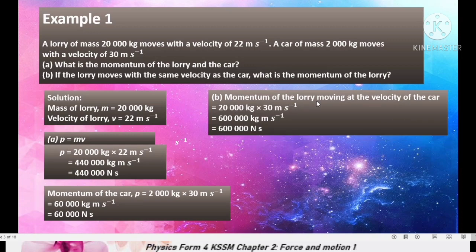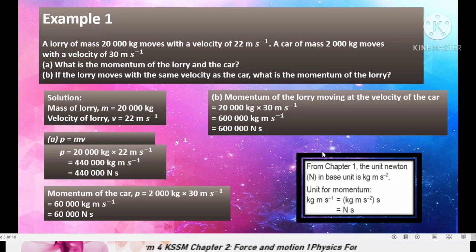For part B, momentum of lorry moving at velocity of the car. Velocity of the car is 30 m per second negative 1. So we get 20,000 times 30. So we get 600,000 kg meter second negative 1 or 600,000 newton second. For the unit, if you still cannot understand how we get newton per second, you can refer to chapter 1.